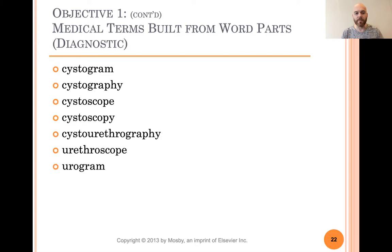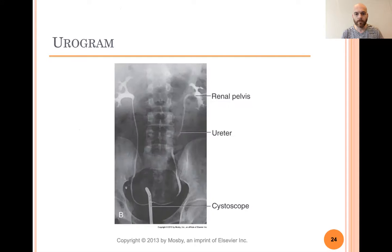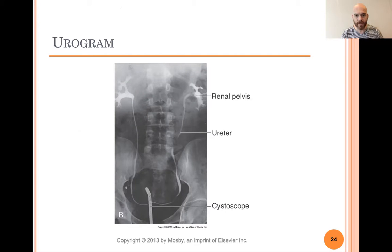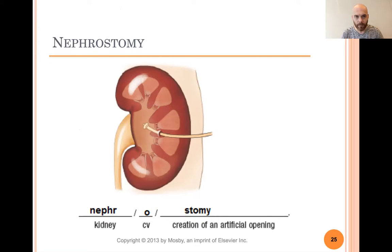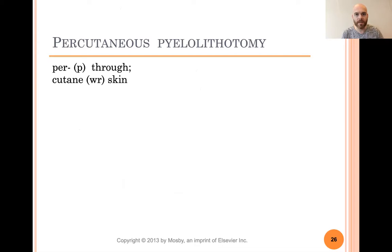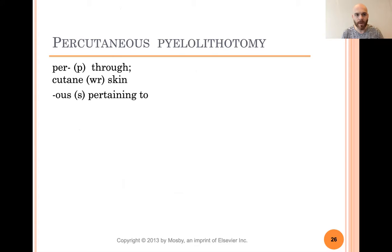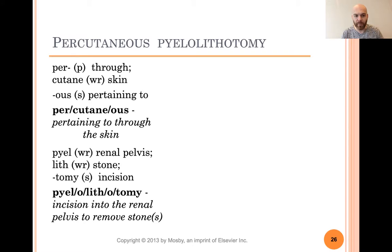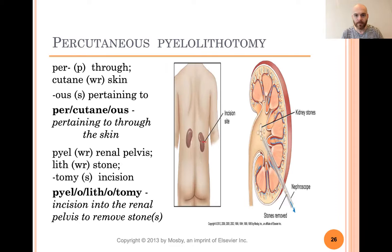There are different types of tests called urograms. Here's a nephrostomy image. There's a cystoscope — you can see it going into the inside of the bladder. Percutaneous pyelolithotomy: per- means through the skin, -ous means pertaining to, pyel is renal pelvis, lith is stone, and -tomy is incision. So this means incision into the renal pelvis to remove stones. That's a long word — and that's exactly what the surgery would look like.